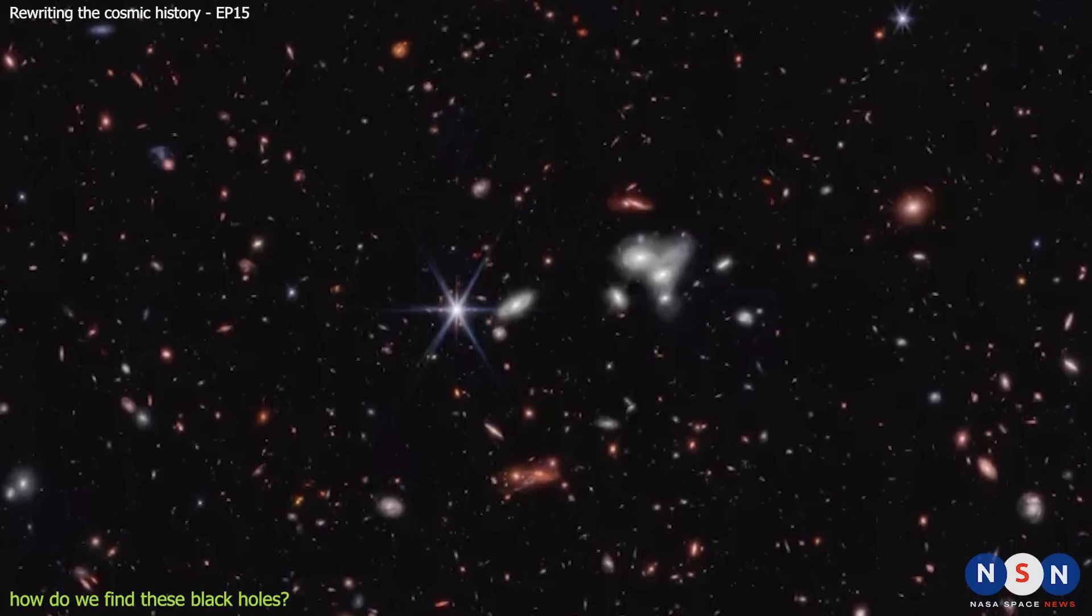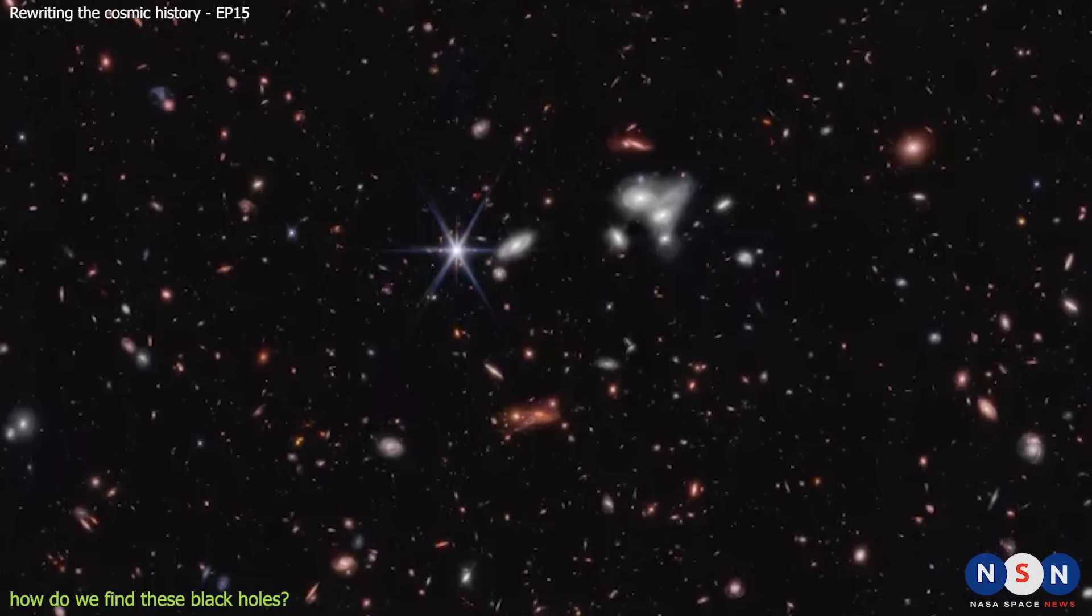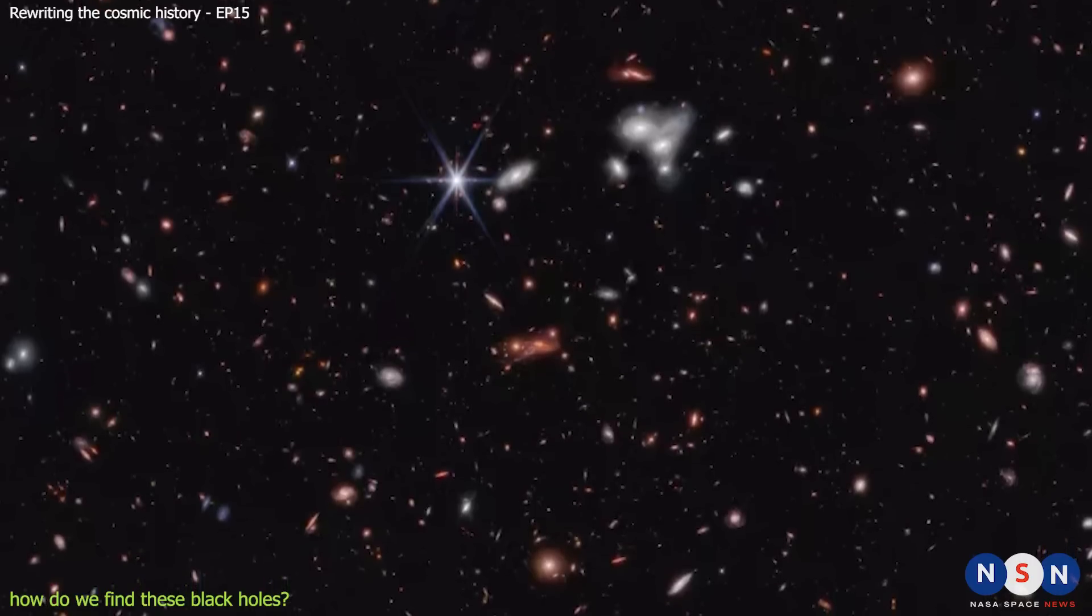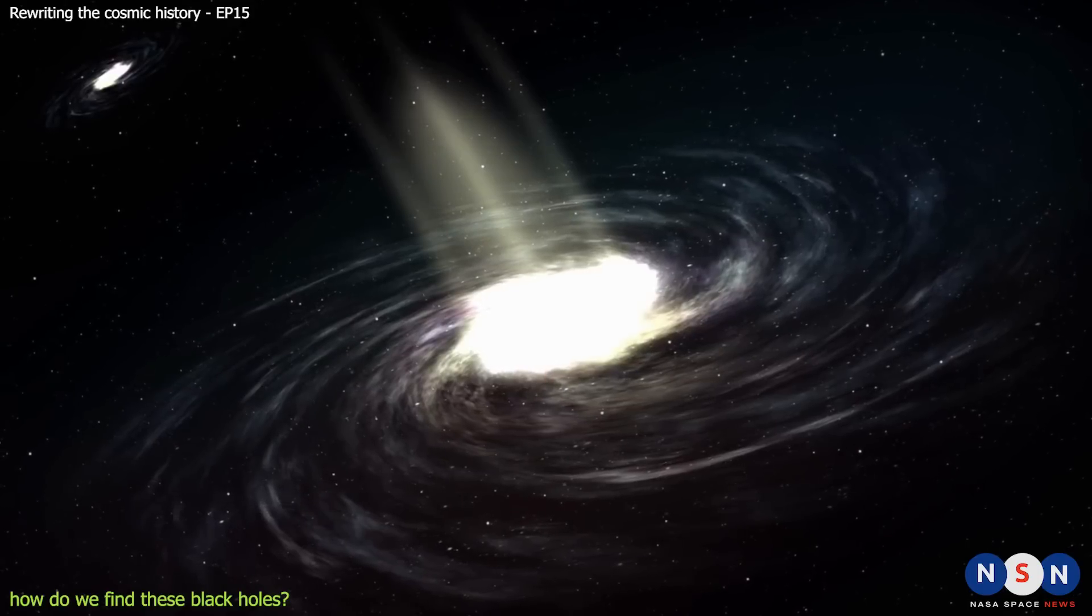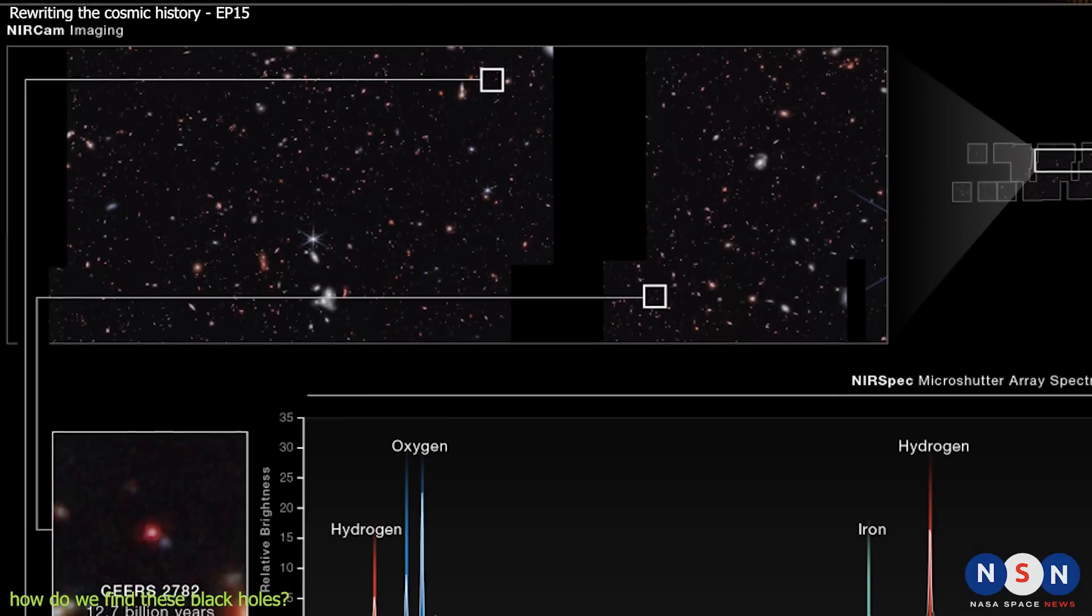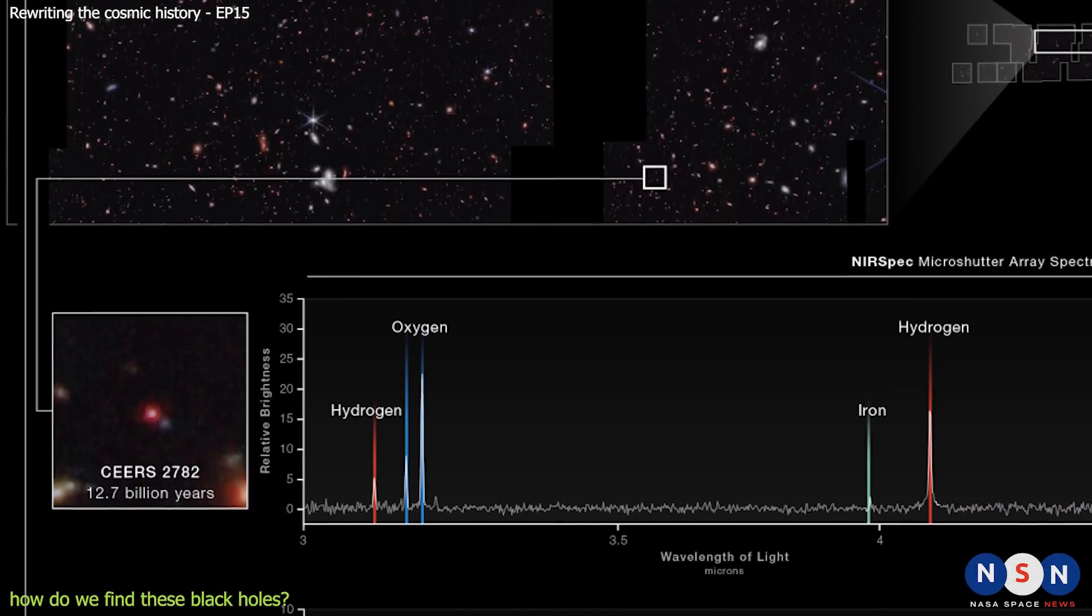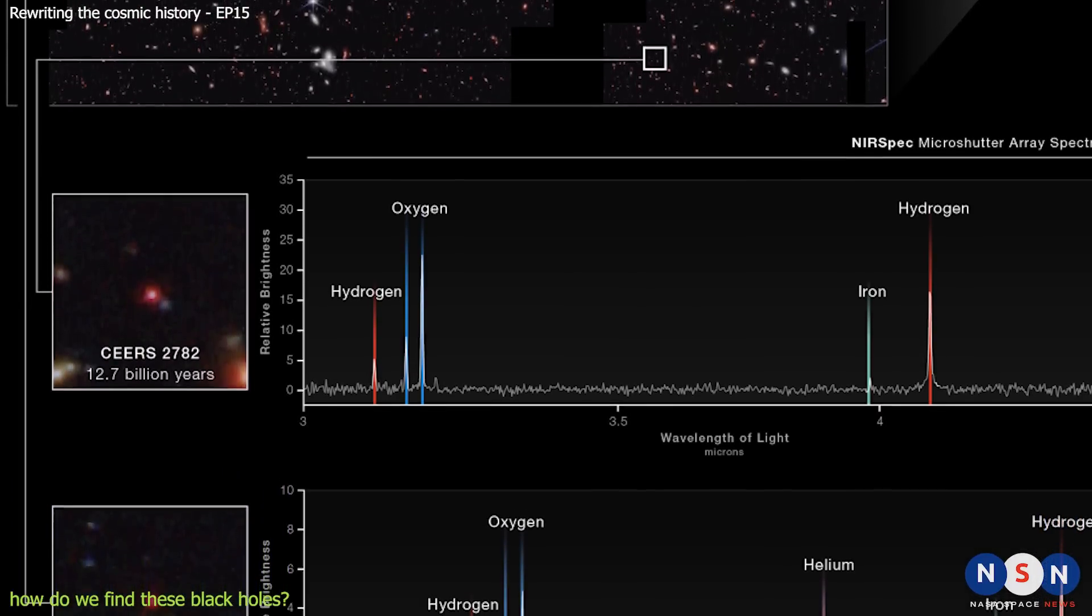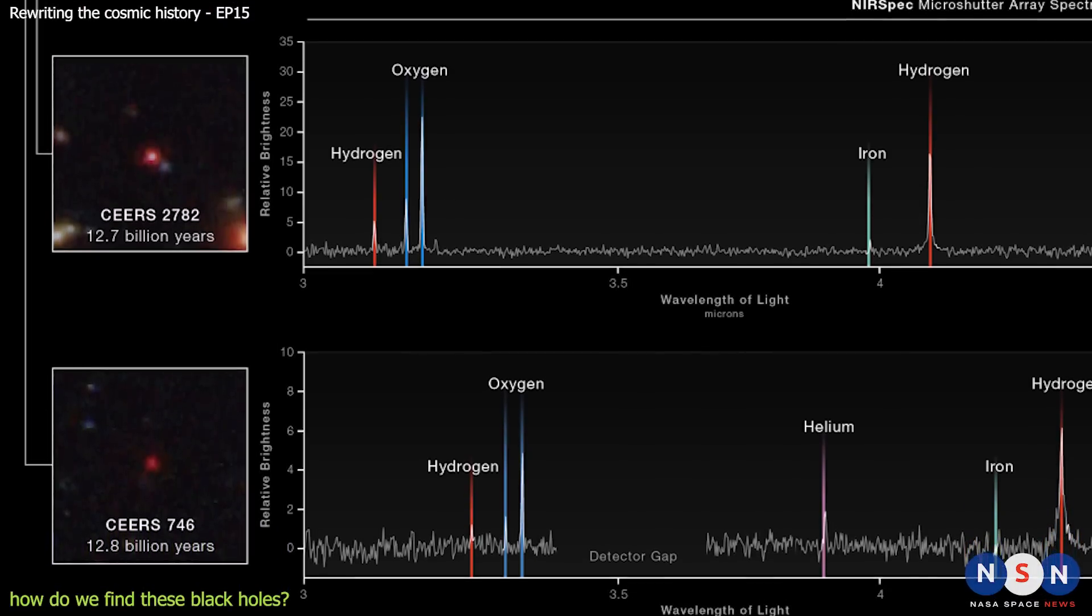But even with James Webb, finding these black holes is not straightforward. We need to use various techniques and methods to identify them among the millions of other sources in the sky. One of these techniques is called color selection, which means that we look for sources that have a certain color or brightness in different bands of infrared light. This color can indicate that the source is very distant and very bright, which are two characteristics of active supermassive black holes. Another technique is called spectroscopy, which means that we measure the spectrum or the fingerprint of light from the source. This spectrum can reveal information about the chemical composition, temperature, velocity, and distance of the source. It can also show us if there are any emission lines or features that are typical of active supermassive black holes.